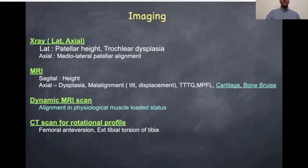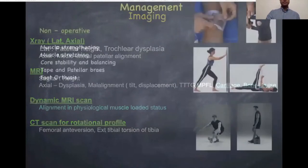Imaging essentially includes AP, lateral, and skyline views on X-ray, MRI scan, and dynamic MRI scan to assess the physiological loading situation and how it affects the patellofemoral joint. Last but not least, CT scan for the rotational profile as discussed.